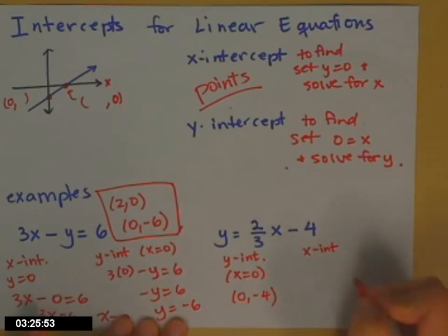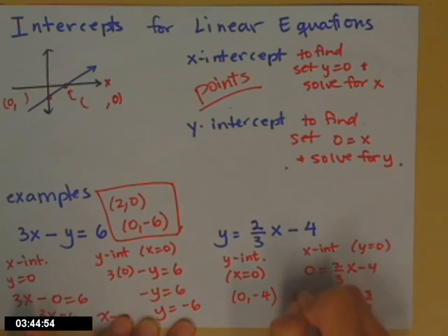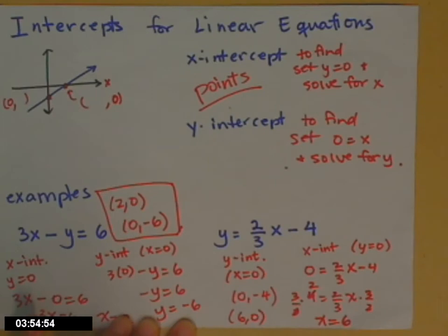Now we're going to have to work a little bit for the x-intercept. Again, y equals 0. So you go to your equation, you force y to be 0, and you find the x-partner. So add 4 to both sides, and then multiply both sides by 3/2 to get the x all by itself. Looks like x is 6. So the x-intercept is the point. I'll go ahead and write it under my y-intercept here. 6, 0.